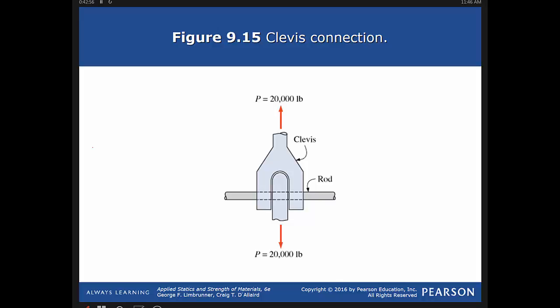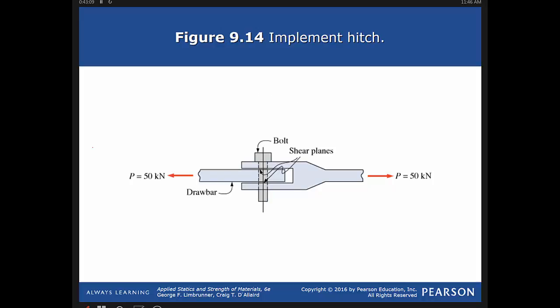On example 912, basically what they're doing is they're trying to figure out what the shear stress is. They say okay, so you figure out what the shear stress is for the 19 millimeter bolt and then figure out what it would be for a 16 millimeter bolt and tell me the difference between the two.